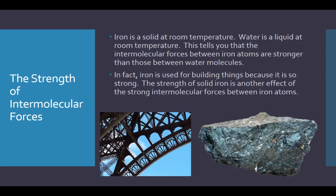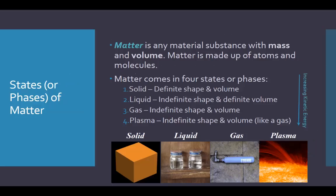Let's go back and look at our phases of matter again. Matter is any material substance with mass and volume. Matter comes in four states: solid, which has a definite shape and volume; liquid, which has an indefinite shape but a definite volume; gas, which has an indefinite shape and volume; and plasma.